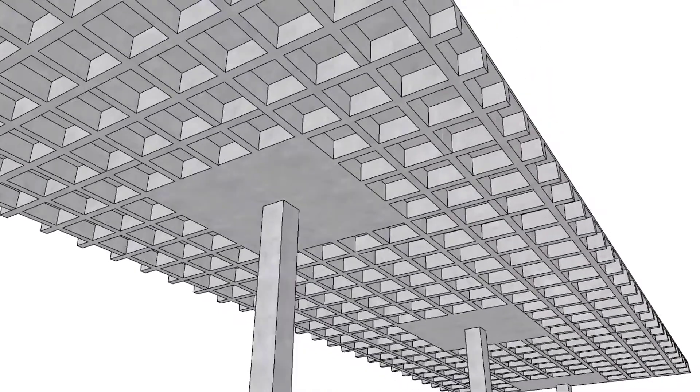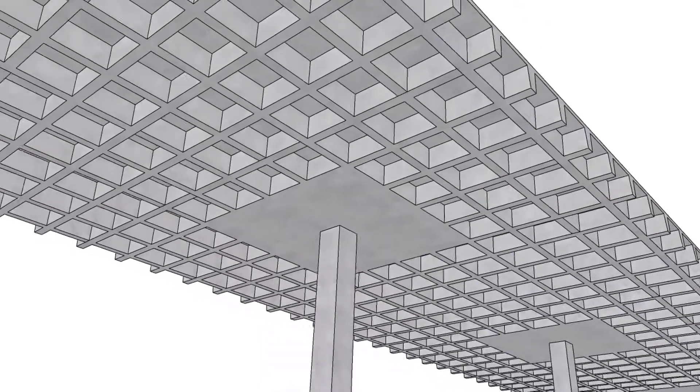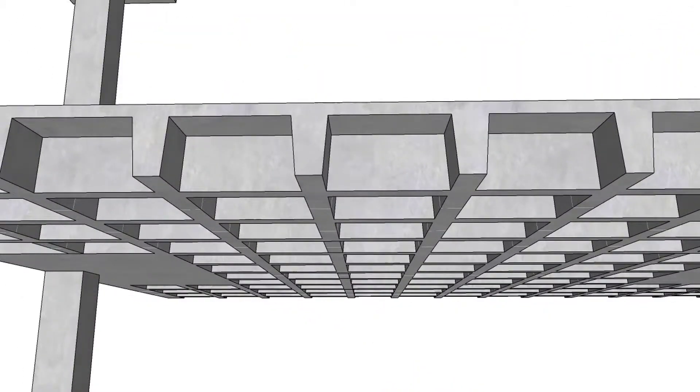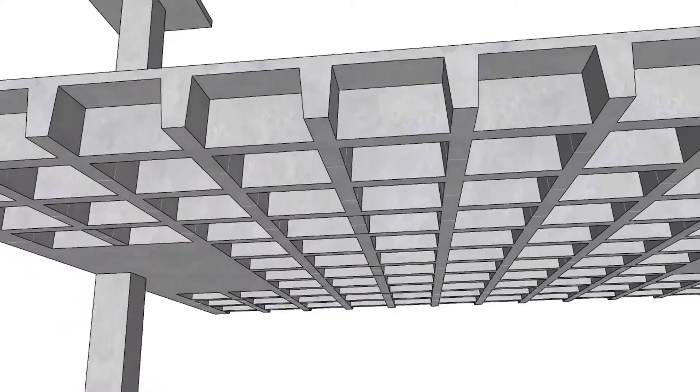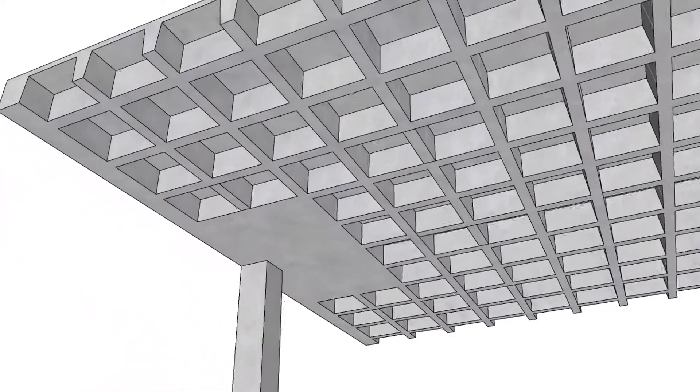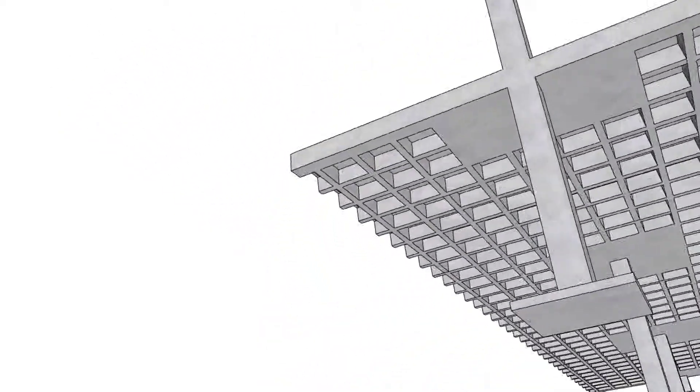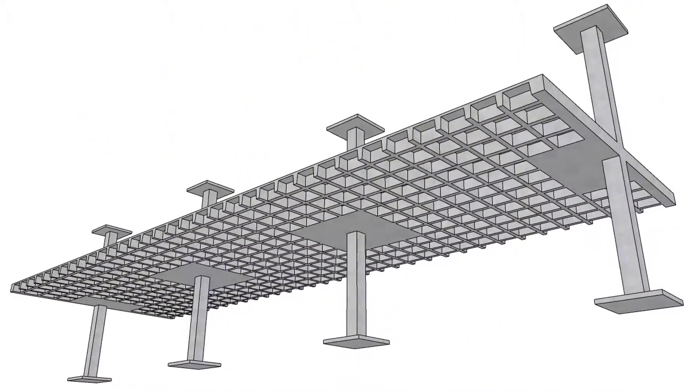A two-way joist or waffle slab system is utilized for long spans with heavy loads. The dome voids reduce the dead load, and electrical fixtures can be placed in the voids. This system provides an attractive ceiling, which results in cost savings since no additional architectural finishes are required. This system is commonly used in libraries, warehouses, office buildings, and industrial plants.